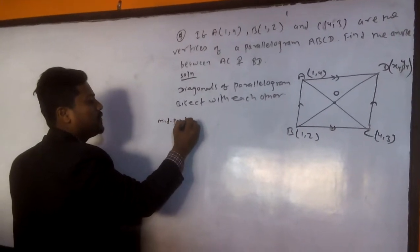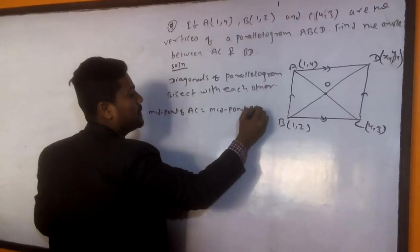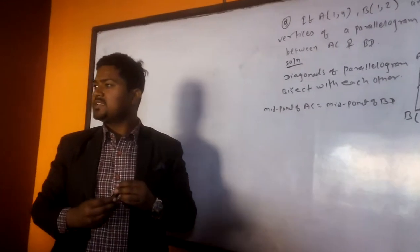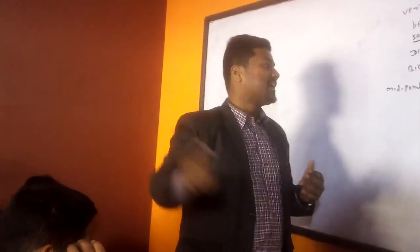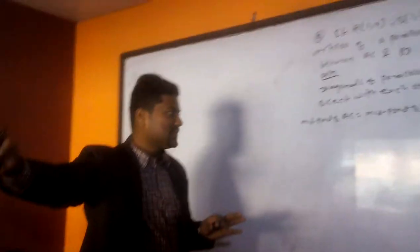So now we can write midpoint of AC is equal to midpoint of BD. So what is the midpoint formula? That is all the important things. So midpoint formula, can you say midpoint formula? X2 minus X1, 2 minus Y, no, no, no. You are wrong. Also, midpoint formula: X1 plus X2 by 2 comma Y1 plus Y2 by 2. That's right. It's wrong.